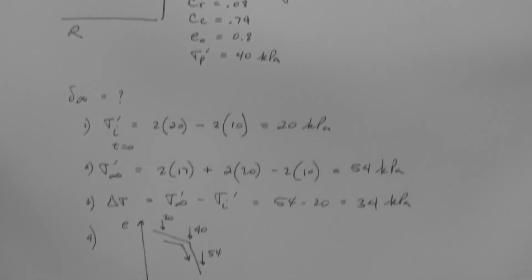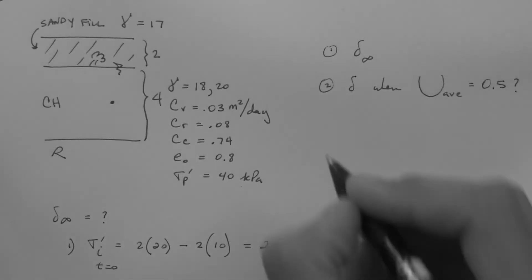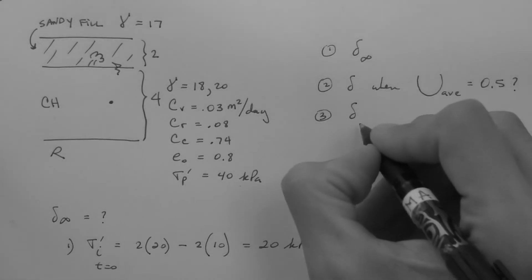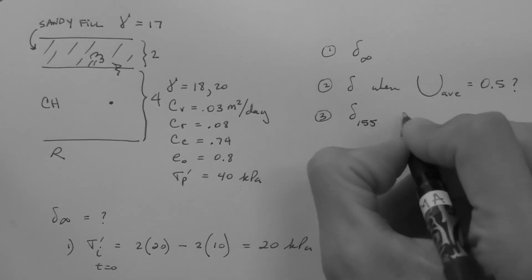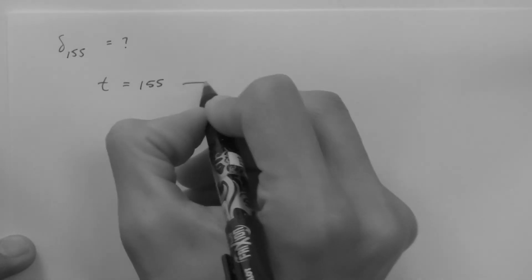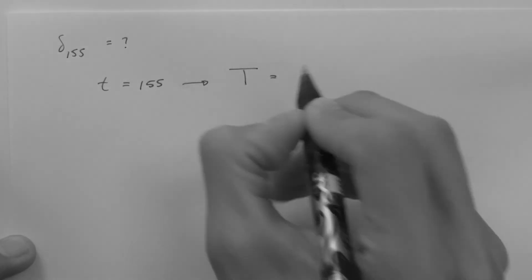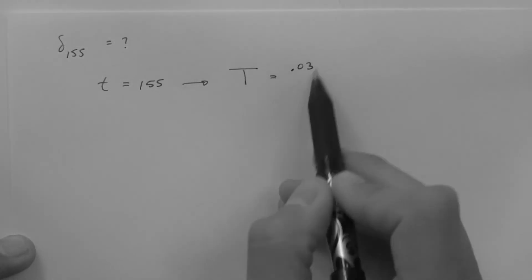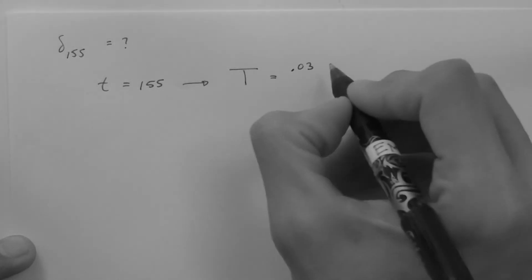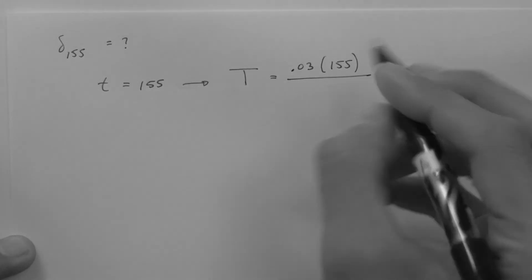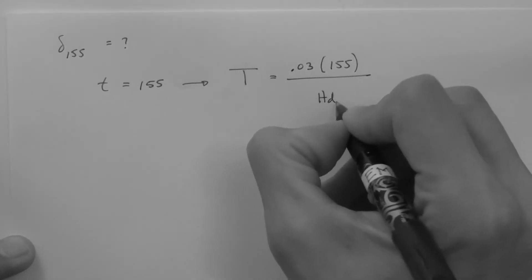Let's add a third question. What is the settlement 155 days after field placement? For a time of 155 days, the time factor is equal to 0.03, which is the coefficient of consolidation, which is given, times 155 days, divided by HDR squared.